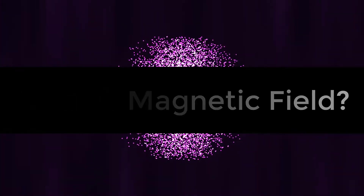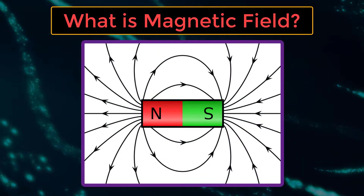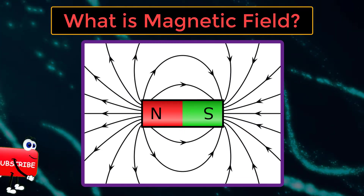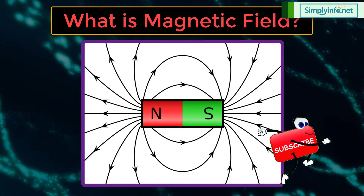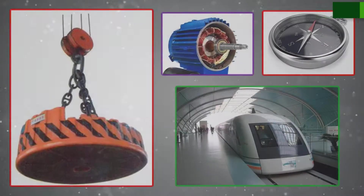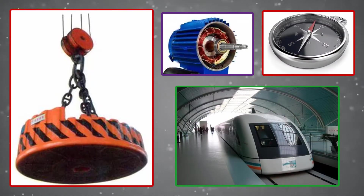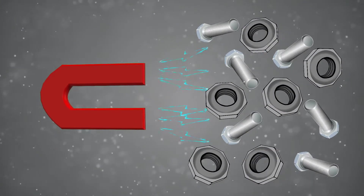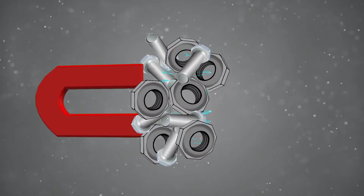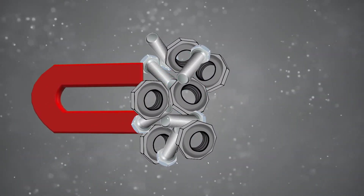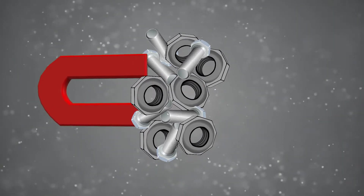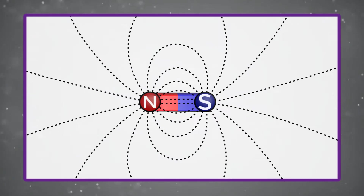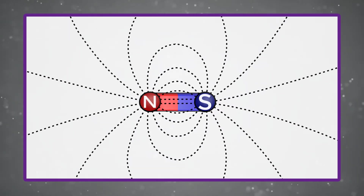What is magnetic field? A magnetic field is a vector field that describes the magnetic influence of electrical currents and magnetized materials. In everyday life, the effects of magnetic fields are most readily encountered with nearby permanent magnets, which pull on magnetic materials such as iron and attract or repel other magnets. A magnetic field exists in the region surrounding a bar magnet and is characterized by its strength and direction.